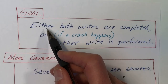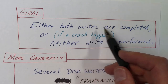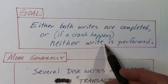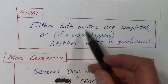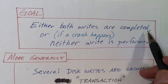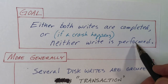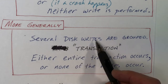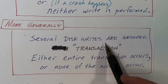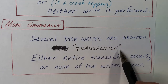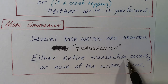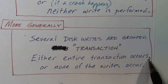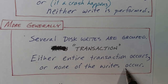With an operation involving two writes, our goal is that either both writes are completed and the disk is updated, or if a crash happens, neither of the writes is actually performed. So it's either all or nothing — we don't have a situation where one write is done to the disk but the other is not. More generally, we group several disk writes into a single transaction. Either the transaction occurs and the disk is updated, or the transaction does not occur before the crash and none of the writes occur.